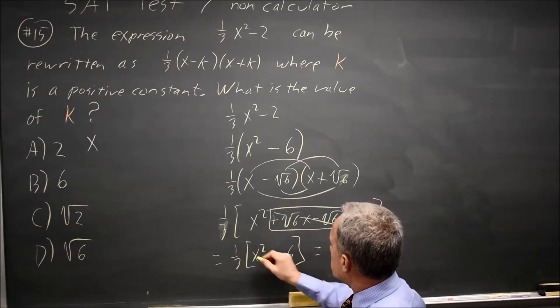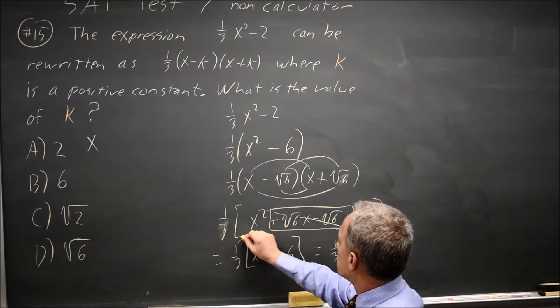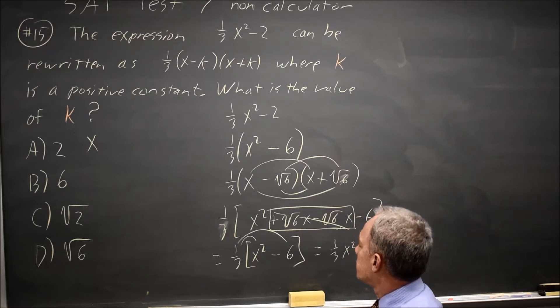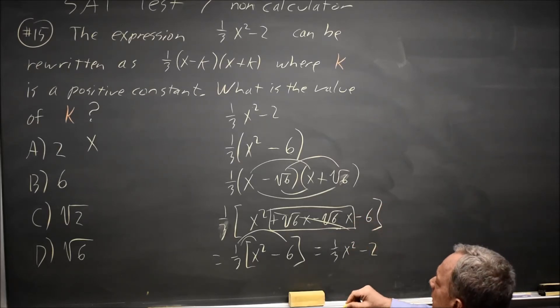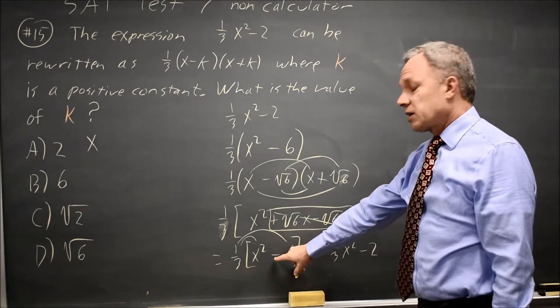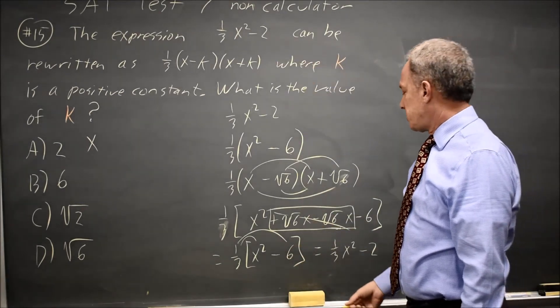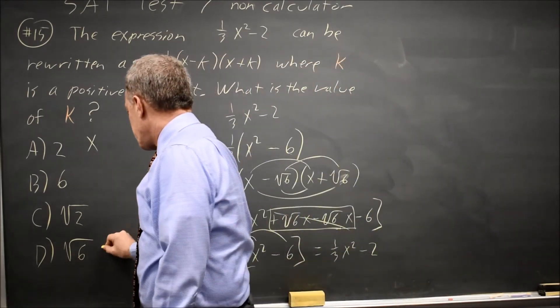And that distributes: 1/3 times x² is 1/3 x², 1/3 times negative 6 is negative 2. And 1/3 x² - 2, without the parentheses that I had here, is my original expression. So the correct answer is choice D.